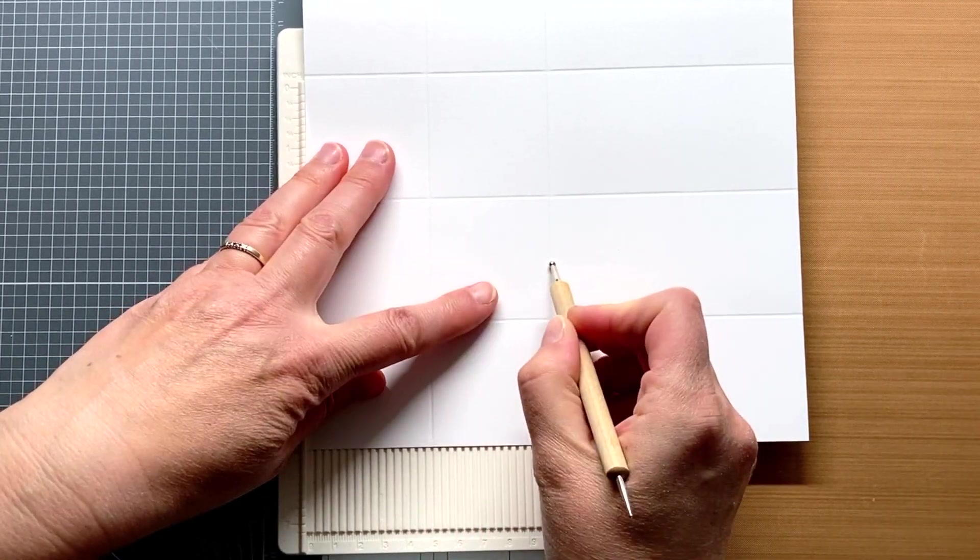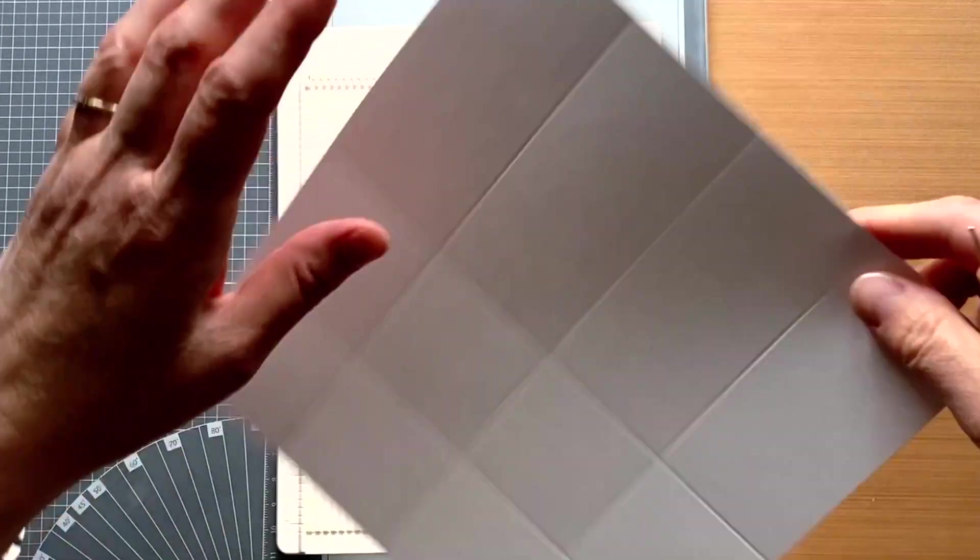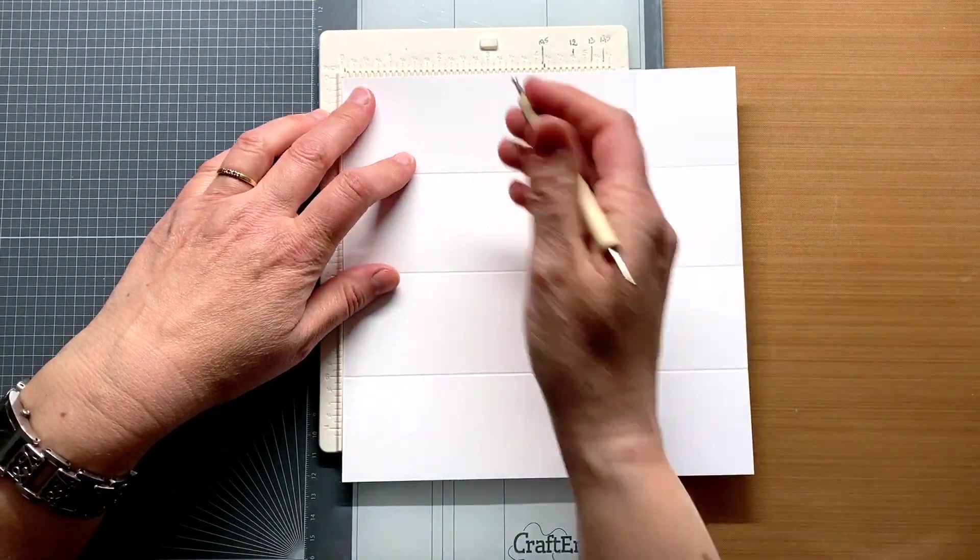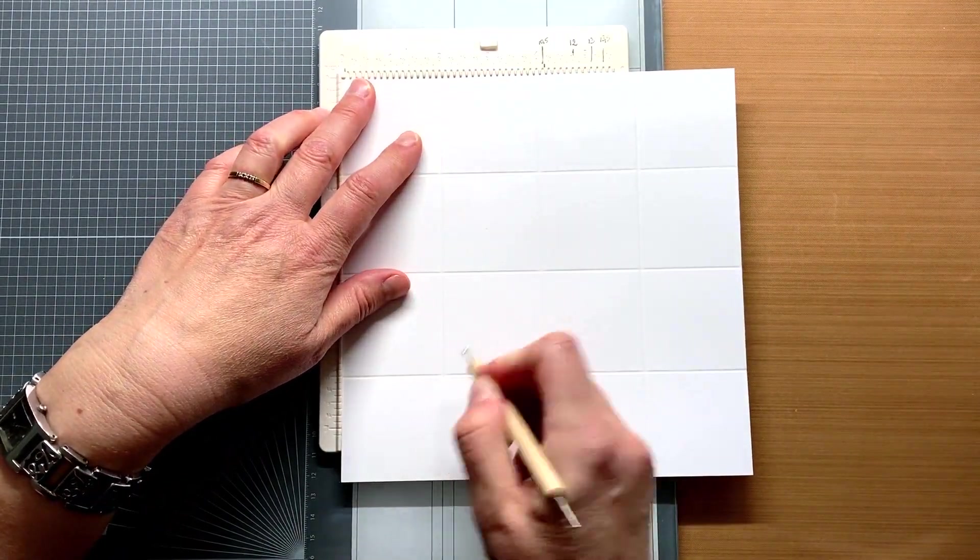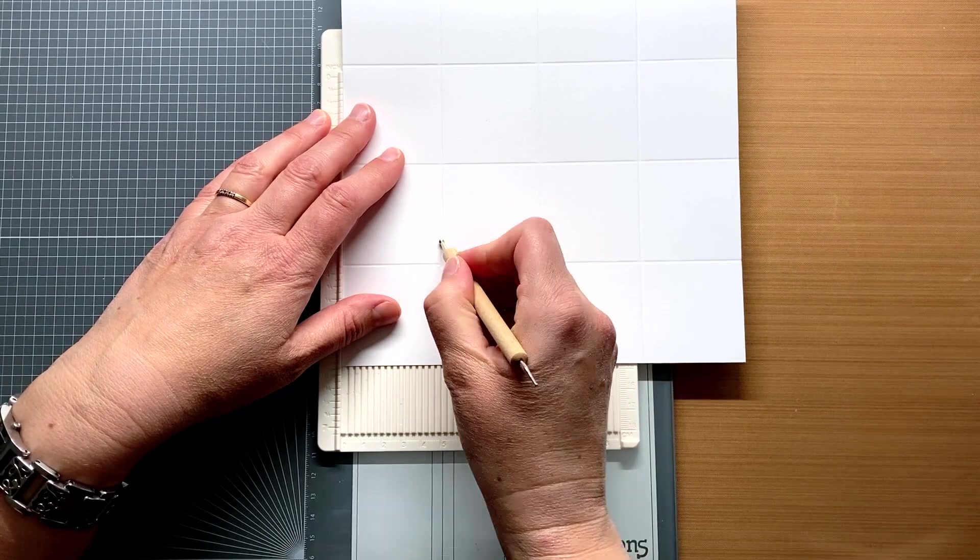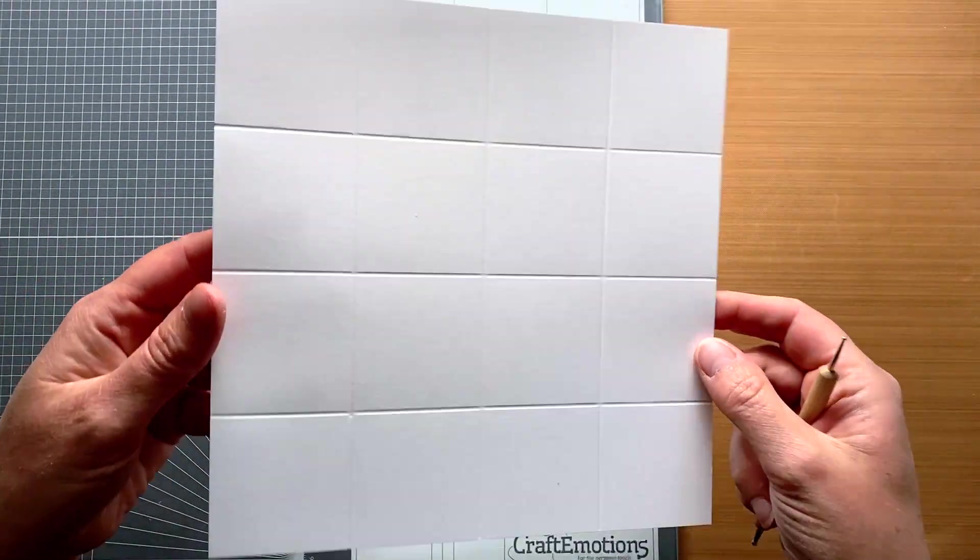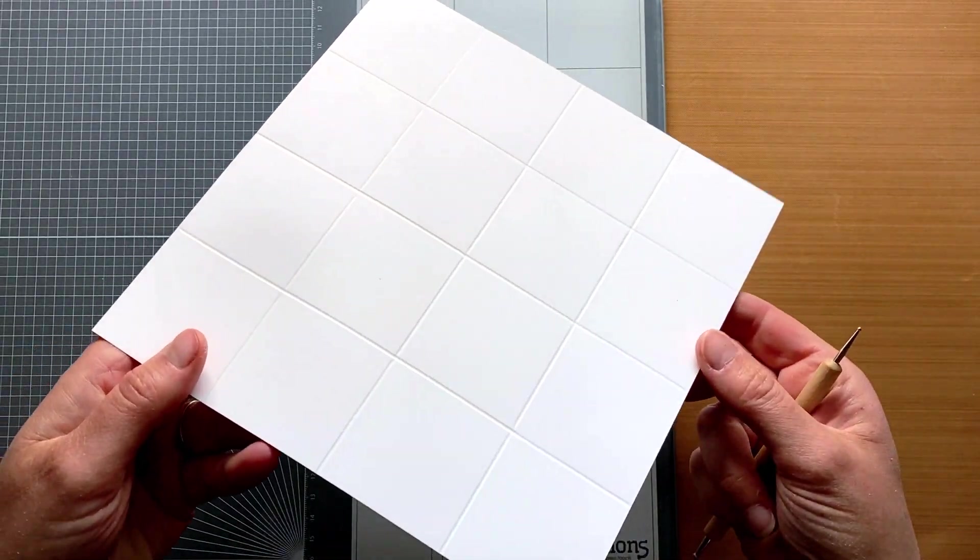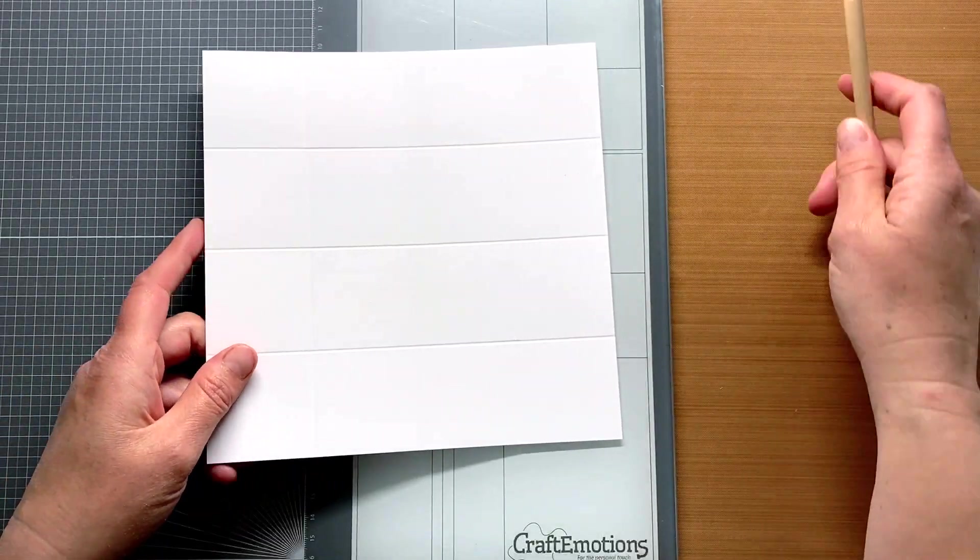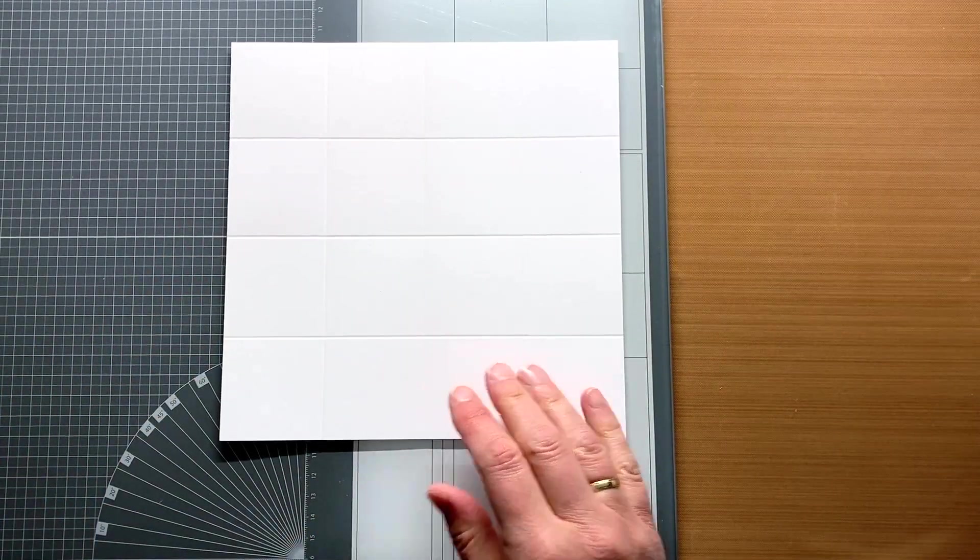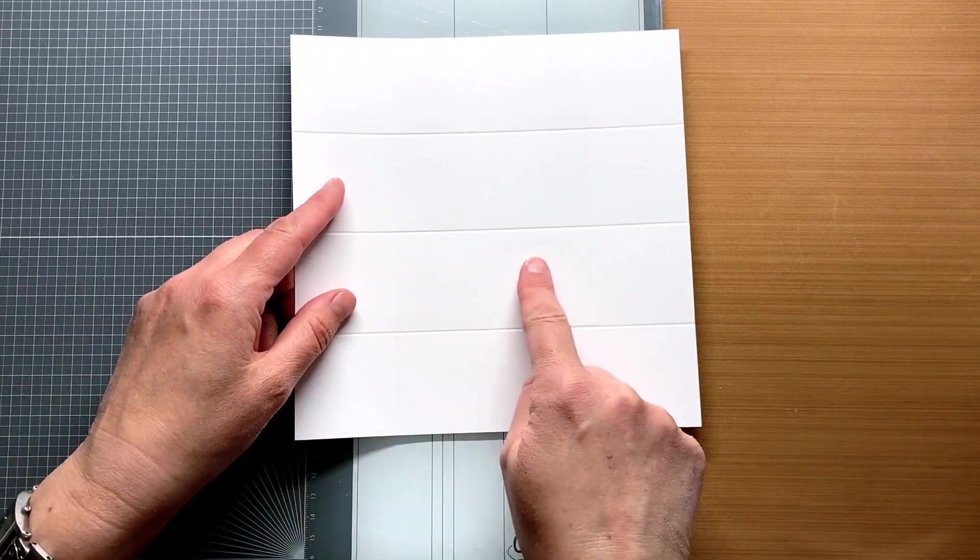I now turn the sheet a quarter turn, and again crease lines at the same distances. If you work in centimeters, then you put lines at 5, 10 and 15 centimeters. It has now become a sheet with 16 2-inch squares, or if you work in centimeters, 5 square centimeters.